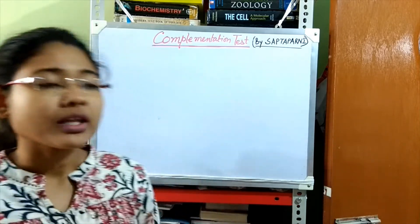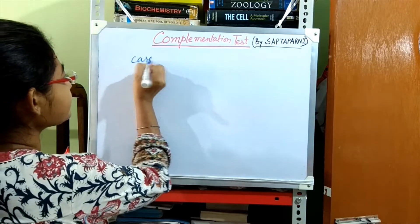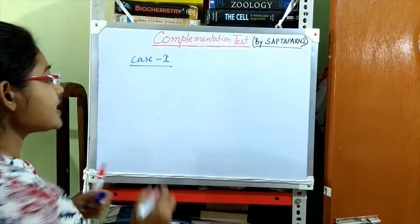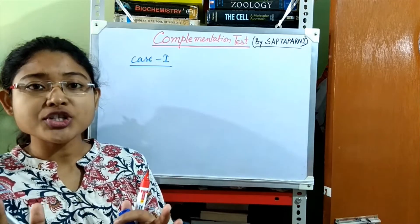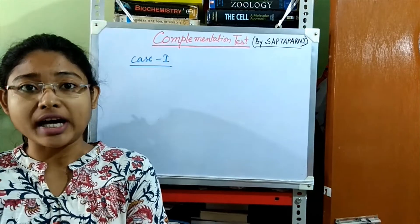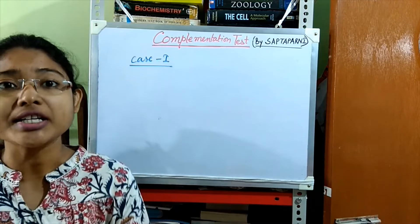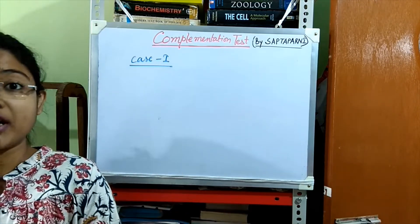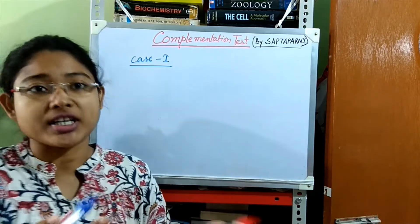Let's take two cases. In the complementation test, what we do is we cross parents with the same phenotype but with different mutations, and we try to find out if the mutations are in the same gene or in different genes by observing the phenotype of the progeny.